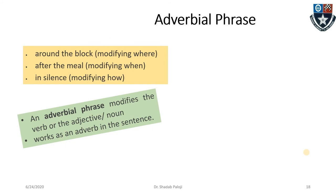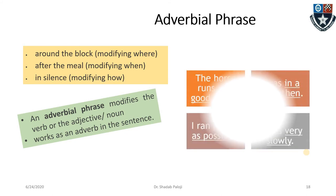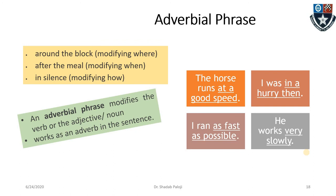An adverbial phrase will modify a verb or an adjective, and it works as an adverb in the sentence. Examples: 'The horse runs at a good speed' — how does the horse run? 'I was in a hurry' — in what condition? 'I ran as fast as possible' — how fast? 'He works very slowly' — how does he work? All these questions ask about the action or the adjective, and since the phrase qualifies the verb or adjective, it becomes an adverbial phrase.